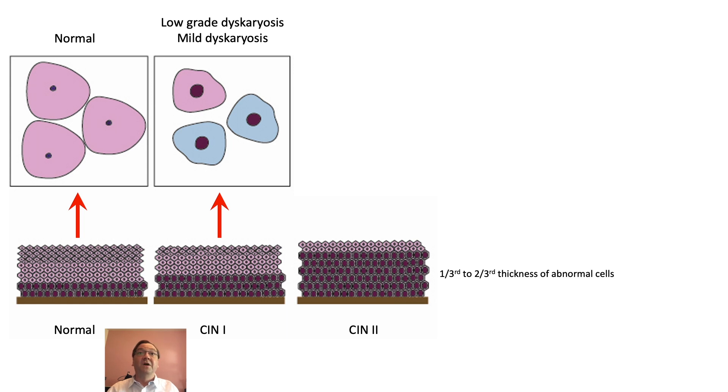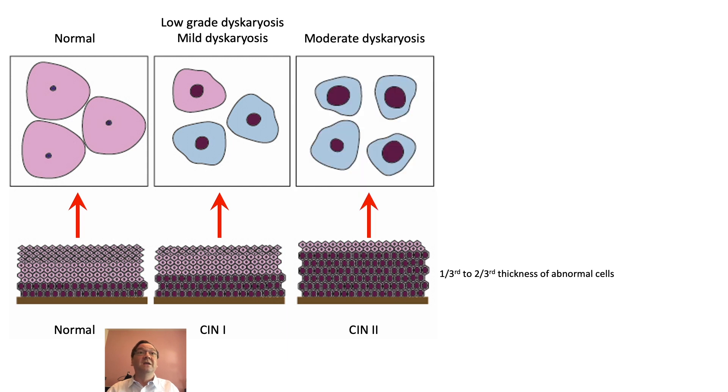CIN2 is when you have a third to two-thirds thickness of abnormal cells. And again, if you look at this picture, you can see what the surface cells would look like during cytology.